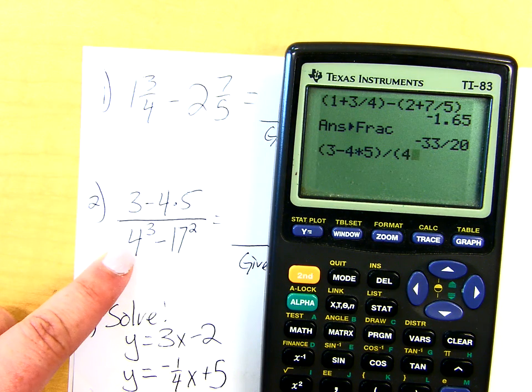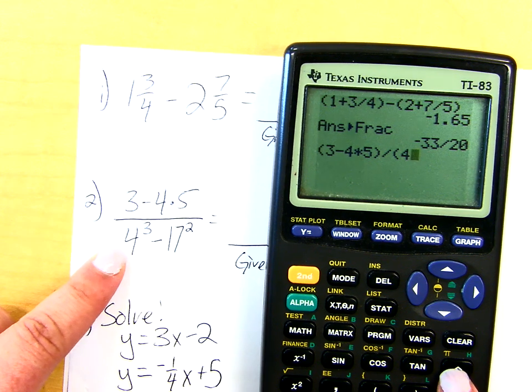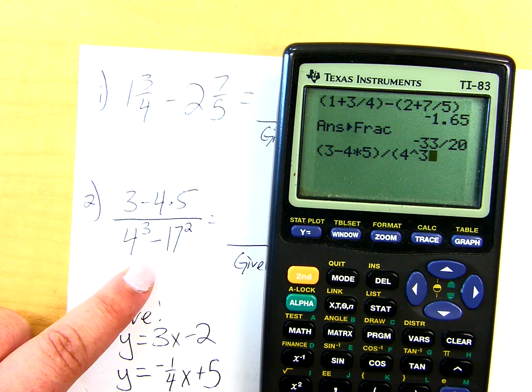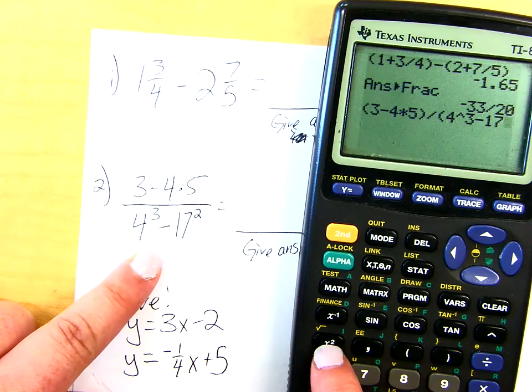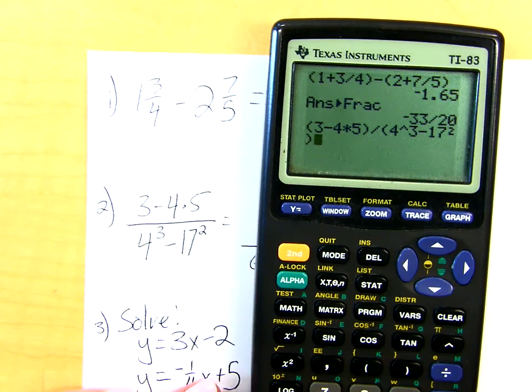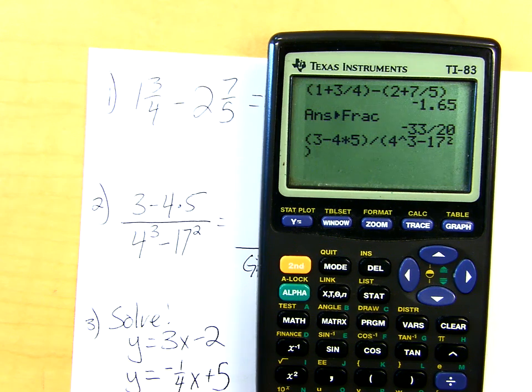4 to the 3rd. How do you raise to the 3rd power? Yeah, you're going to use that caret key right there. So there's 4 to the 3rd, minus 17, and then there is a button for squared because we do it so much. It's right here. You just hit squared and close your parentheses. So there's the numerator divided by the denominator. You hit enter.